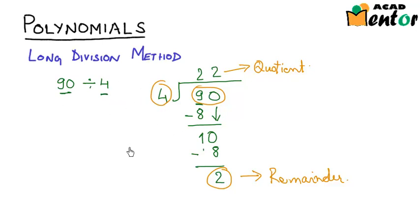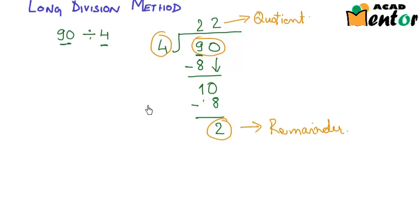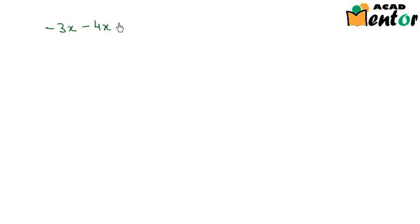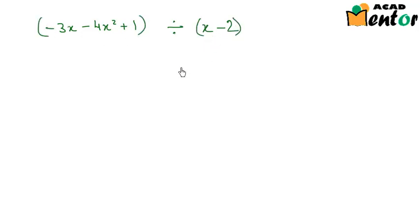Now we will look at how to divide one polynomial by another using this long division method — it is pretty similar to what we did for numerals. Let's take an example: divide minus 3x minus 4x squared plus 1 by x minus 2. The first polynomial is the dividend p(x), and the second is the divisor q(x).